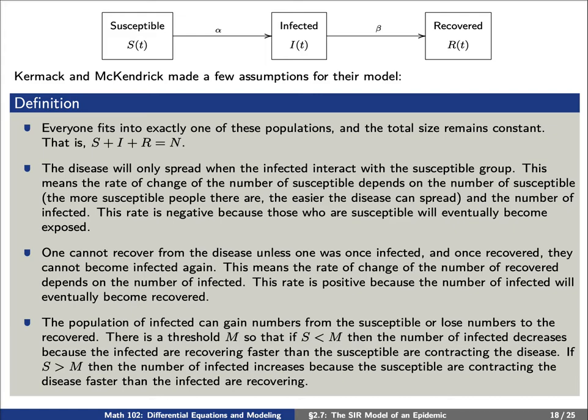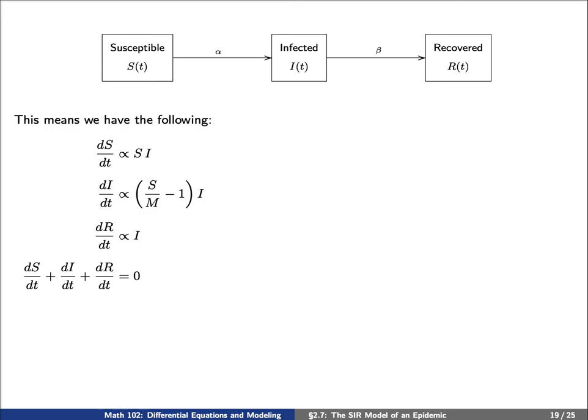Let's put all of this together using some mathematical symbols. Remember that we have three compartments: the number of susceptible, the number of infected, and the number of recovered. According to the rules that we just described, the rate of change for the number of susceptible should be proportional to the number of susceptible as well as the number of infected.